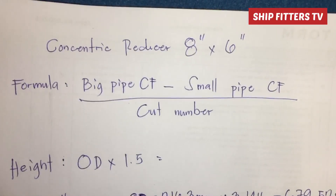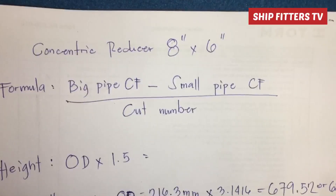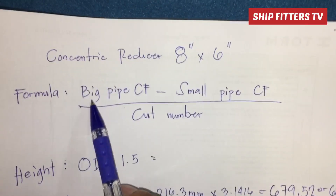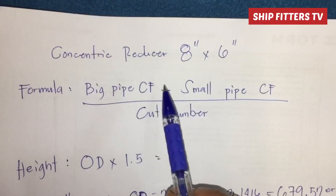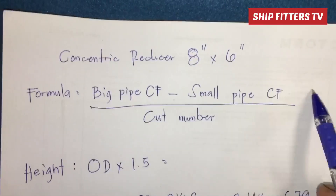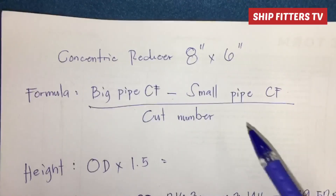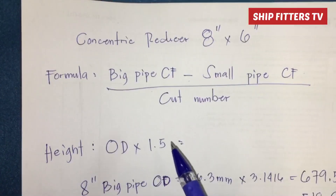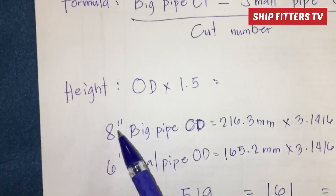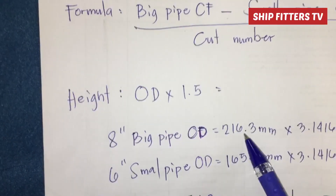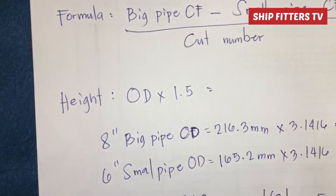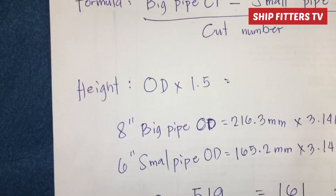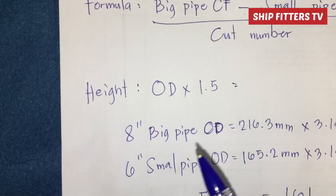Here is the formula for a concentric reducer. We're making a reducer of 8 inches by 6 inches. The formula is: big pipe circumference (CF) minus small pipe circumference, over the cut number — which is the number of cuts. For the height, the formula is OD times 1.5. The 8-inch big pipe OD is 216.3 mm and the 6-inch OD is 165.2 mm. This pipe is Schedule 40 seamless.